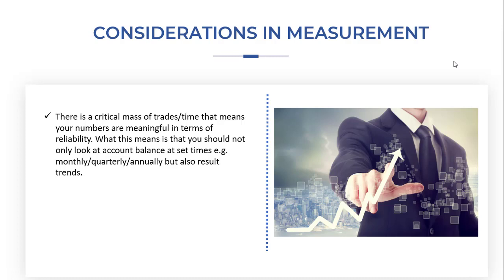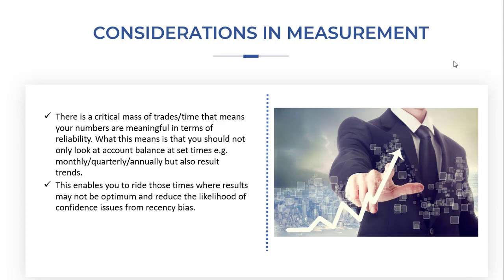As well as that overall number, you need to look at result trends — are they getting better or not? This enables you to write out those times when results may not be optimum, since some market conditions are harder to get reliable results in. It also reduces the likelihood of confidence issues from recency bias, where we only take notice of recent results. If you've had three or four difficult weeks but nailed it month after month for the previous six months, it's unreasonable to judge yourself or your system on just those three or four weeks.